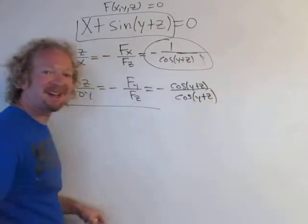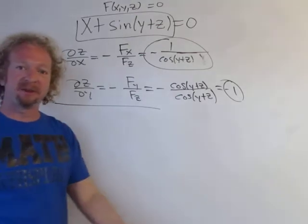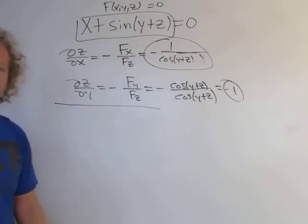Oh look at that—in this case these cancel and you get negative one. What a cool answer! I hope this video made sense. This is how you use implicit differentiation when you have multi-variable functions.